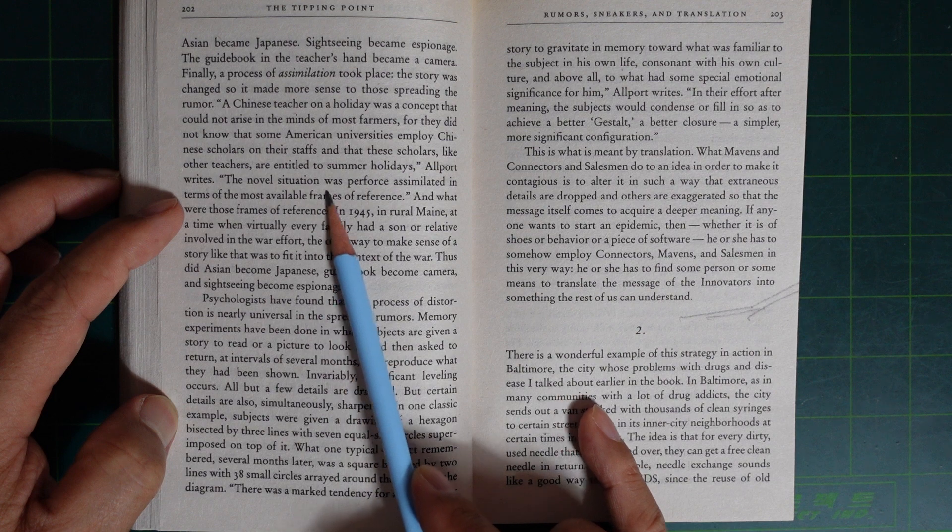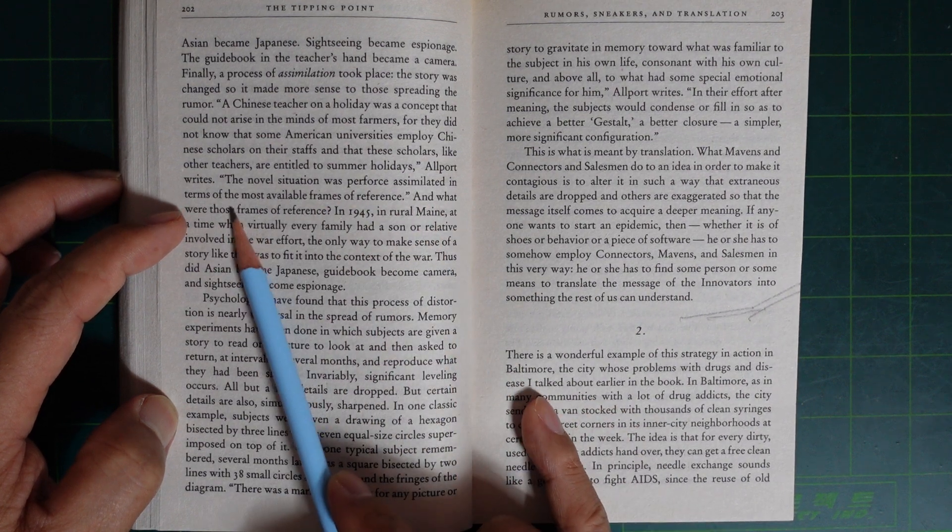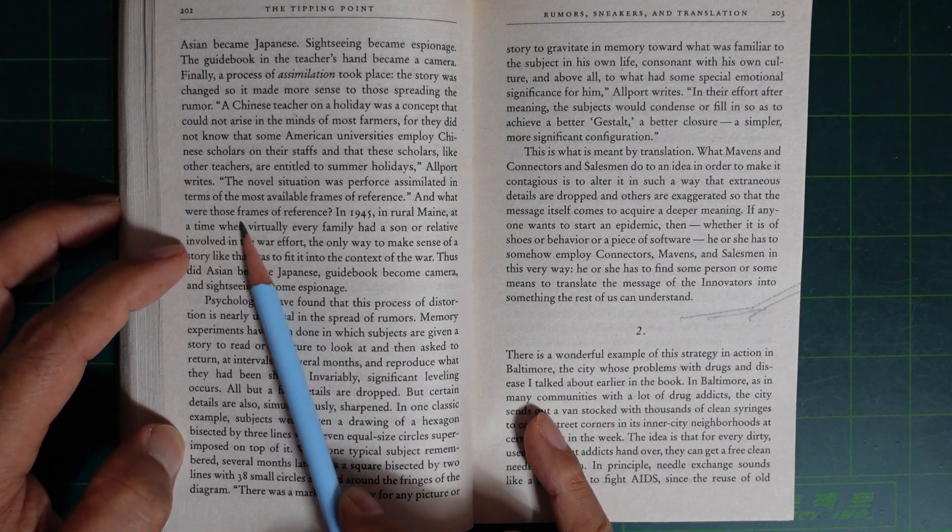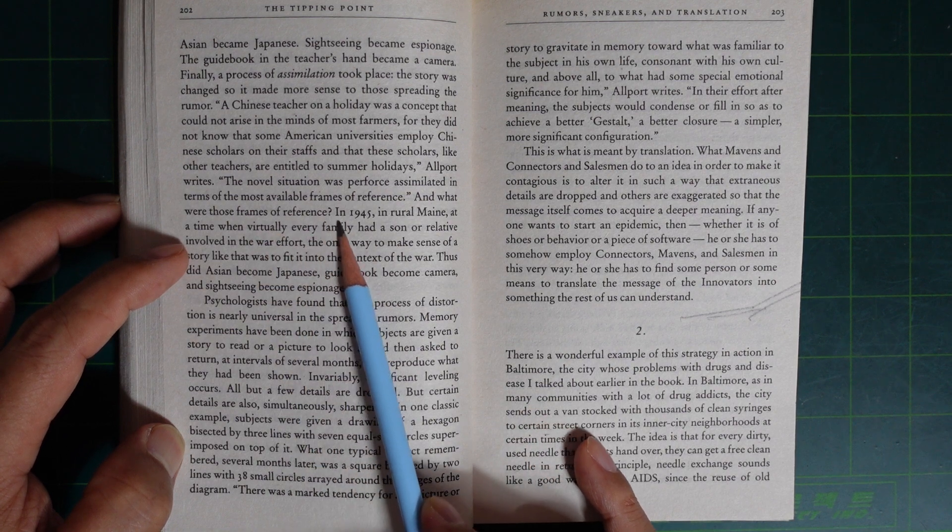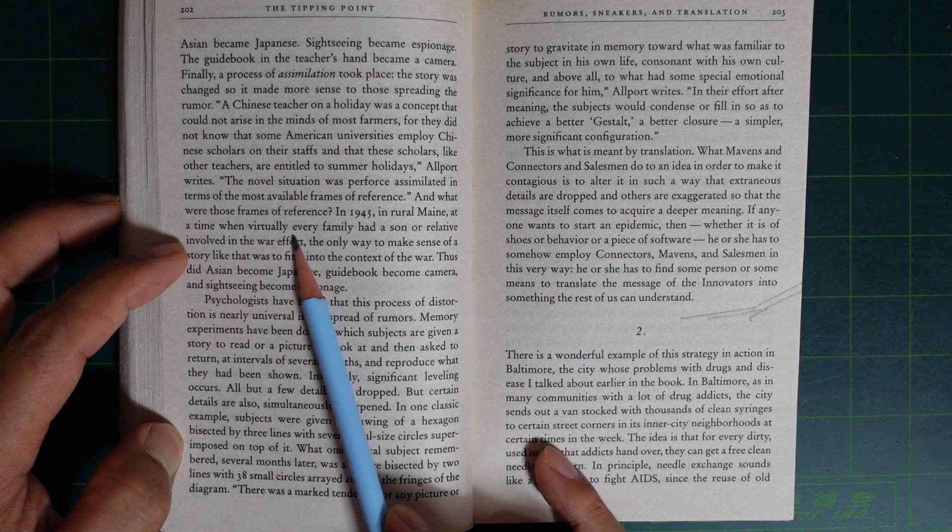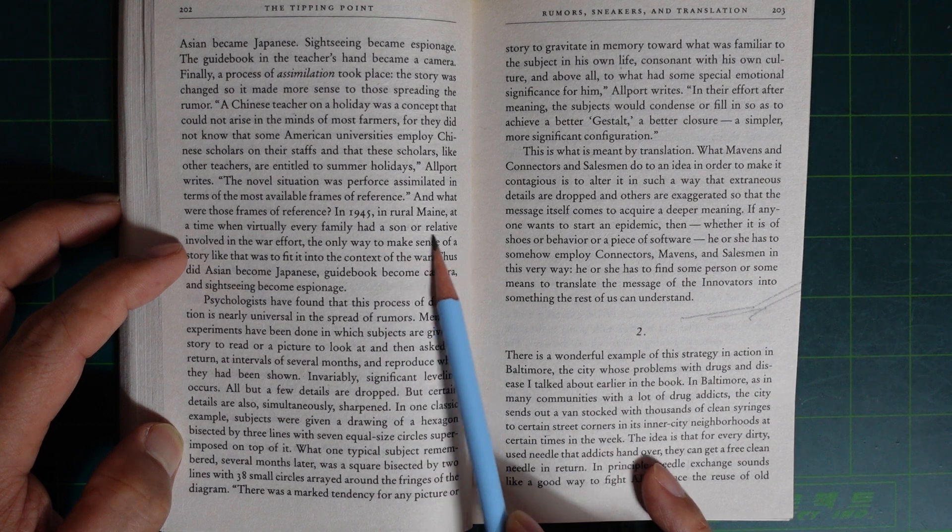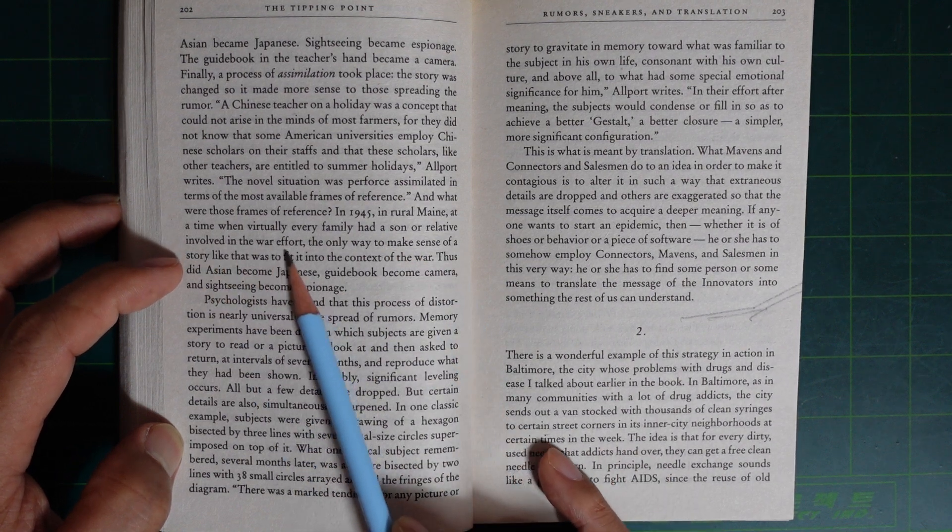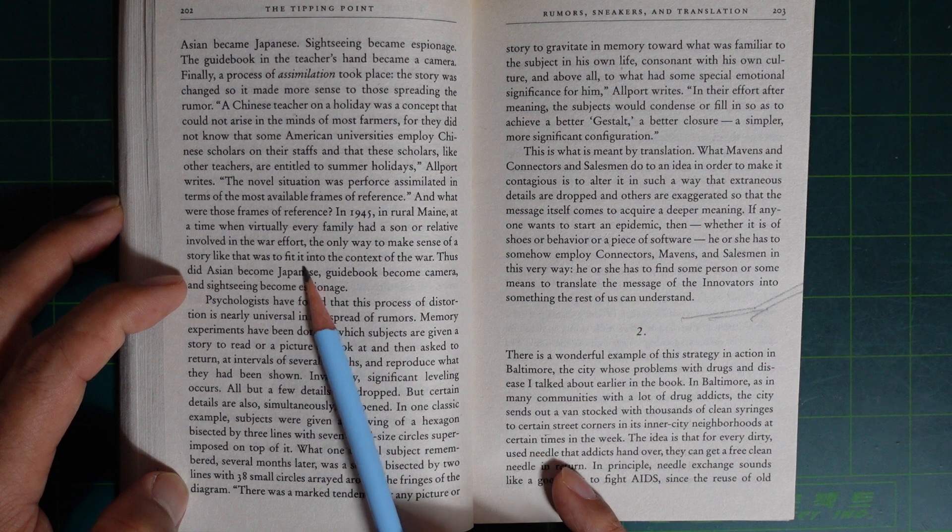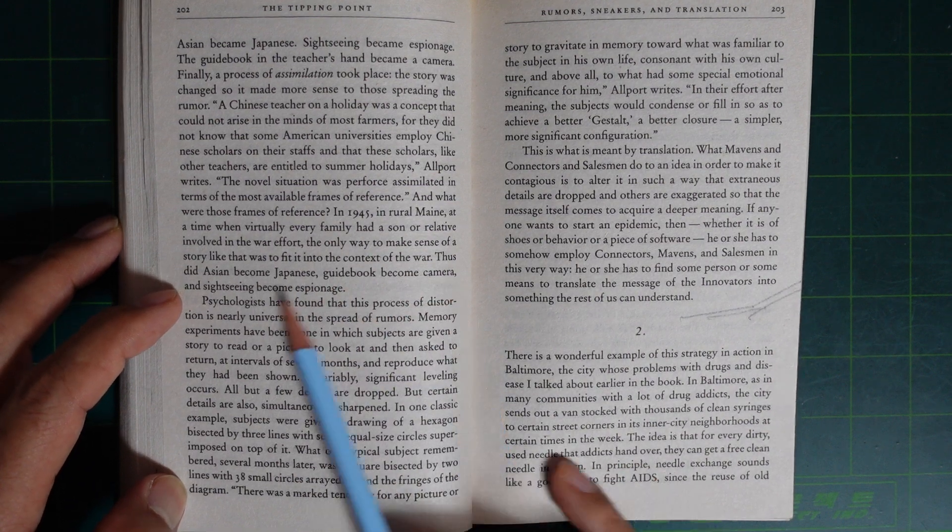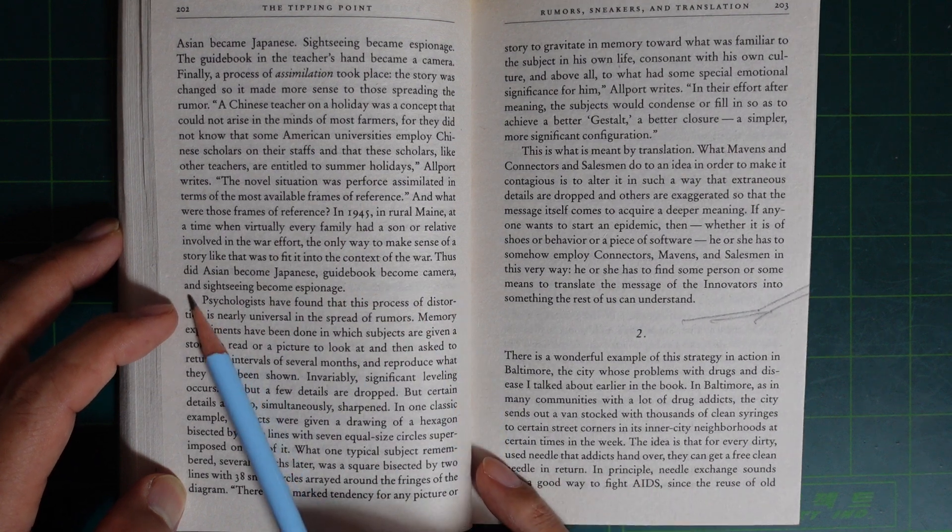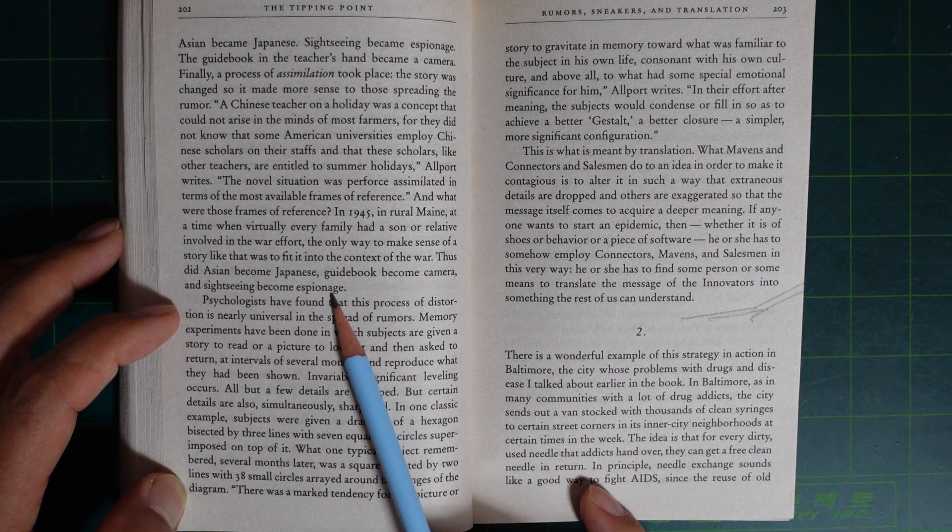The novel situation was perforce assimilated in terms of the most available, familiar frames of reference. And what were those frames of reference? In 1945 in rural Maine, at a time when virtually every family had a son or relative involved in the war effort, the only way to make sense of a story like that was to feed it into the context of the war. Thus, this Asian became Japanese, guidebook became camera, and sightseeing became espionage.